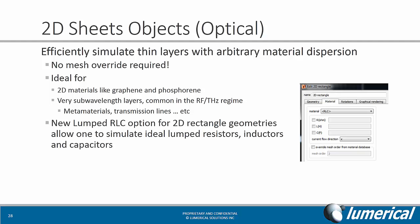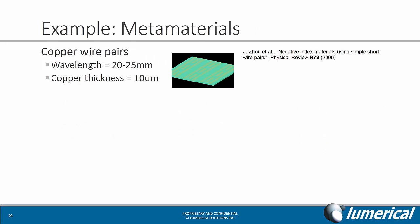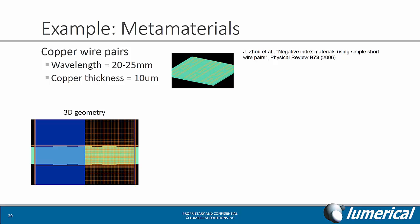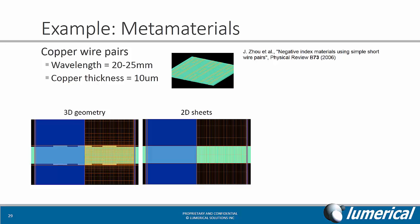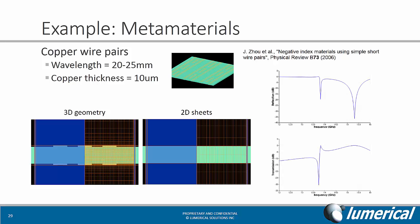The new lumped RLC option for 2D rectangle geometries also allows users to simulate ideal lumped resistors, inductors, and capacitors, which is what was used for the traveling wave modulator earlier. In a metamaterial example with copper wire pairs, the wavelength is between 20 and 25 millimeters, whereas the copper thickness is only about 10 microns. Using brute force with 3D objects would require a very fine mesh to resolve the copper layers, significantly increasing simulation time. Because the copper thickness is very sub-wavelength, it's much more efficient to use a 2D sheet object for the copper — no fine mesh is needed, and you can still get results that agree very well with publication.